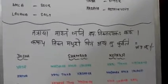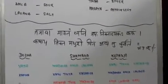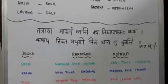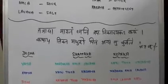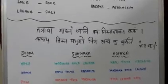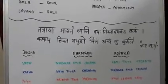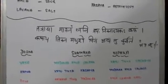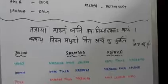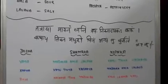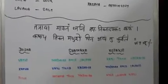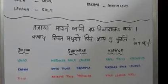That shloka tells us that Madhura, Amla, and Lavana — the first three rasas — are vata shamaka, whereas the last three rasas, that is Katu, Tikta, and Kashaya, are vata kopaka.